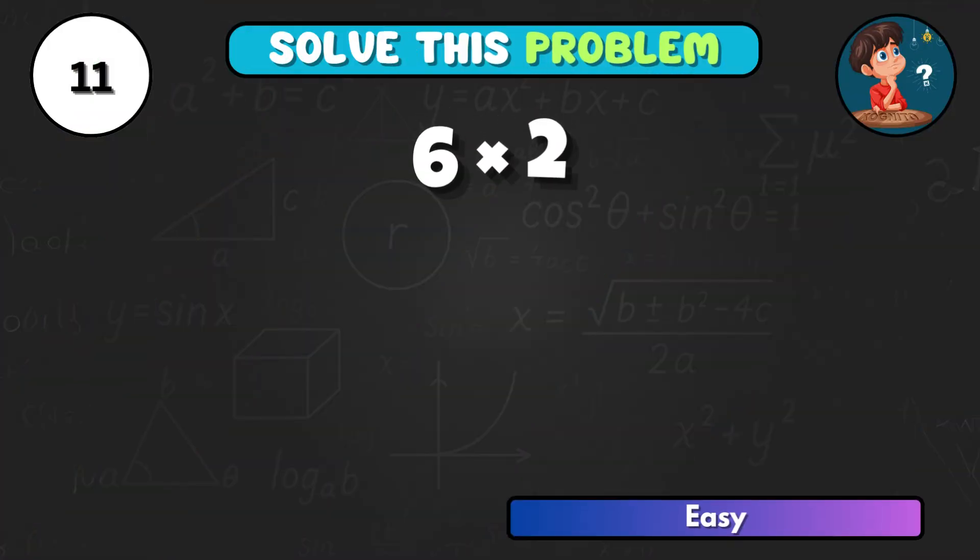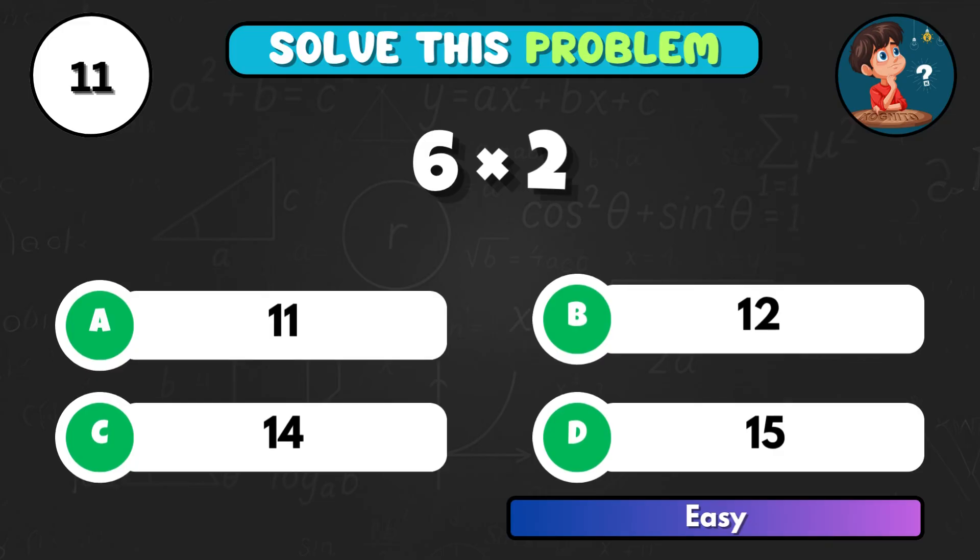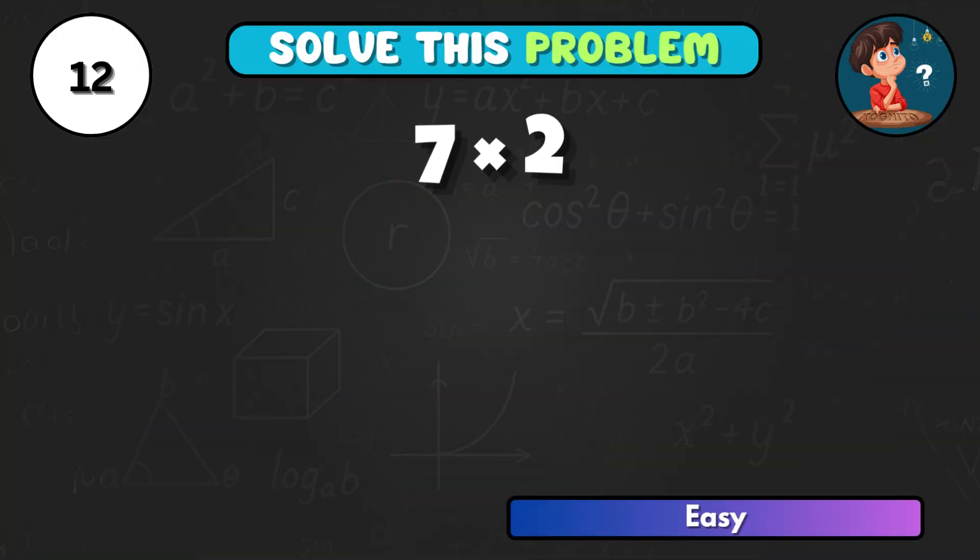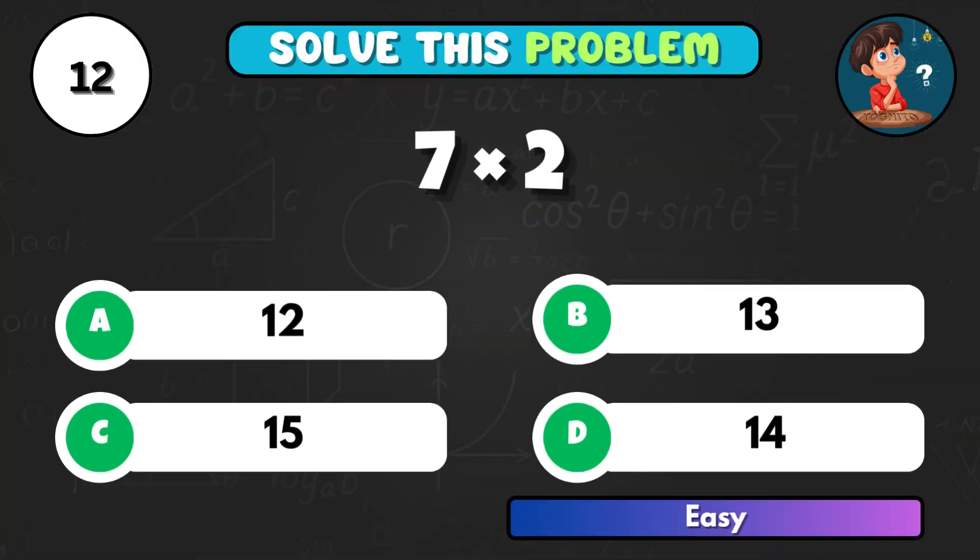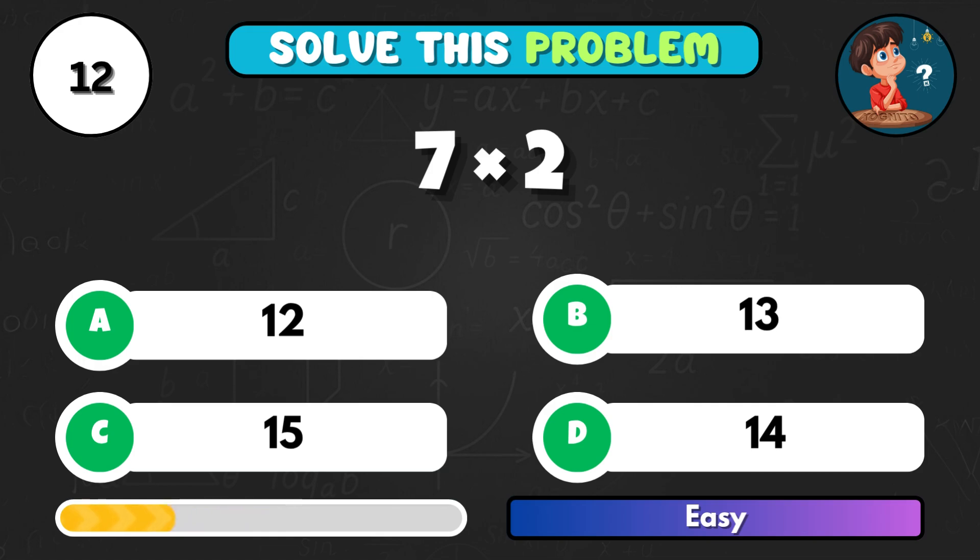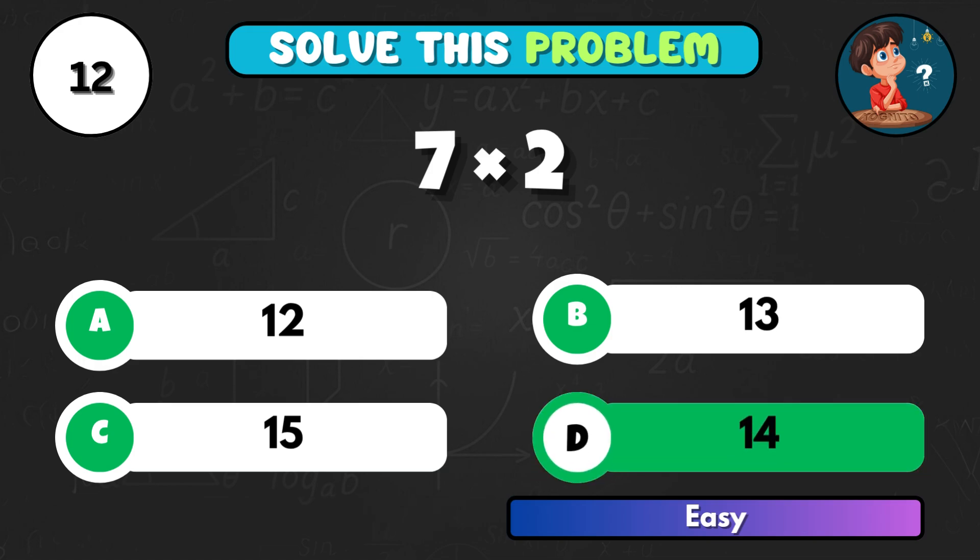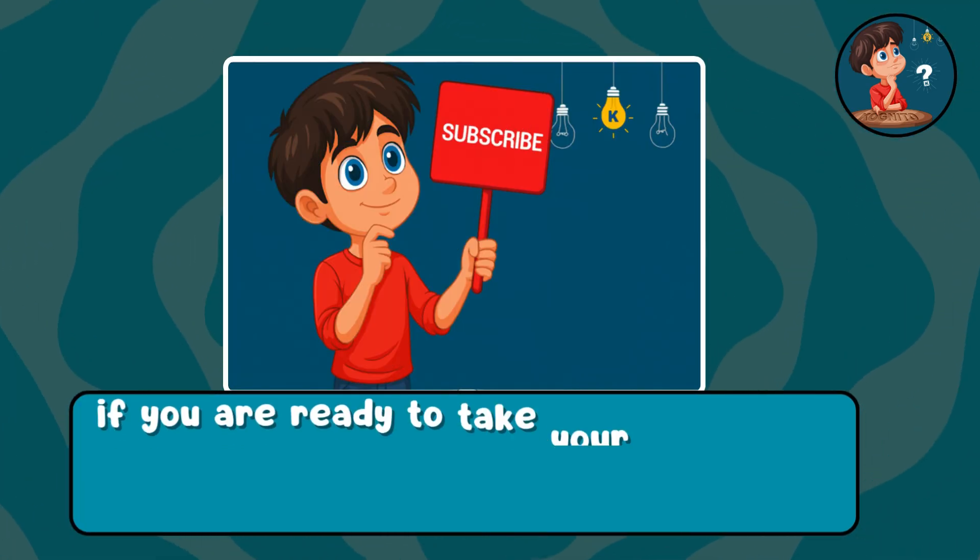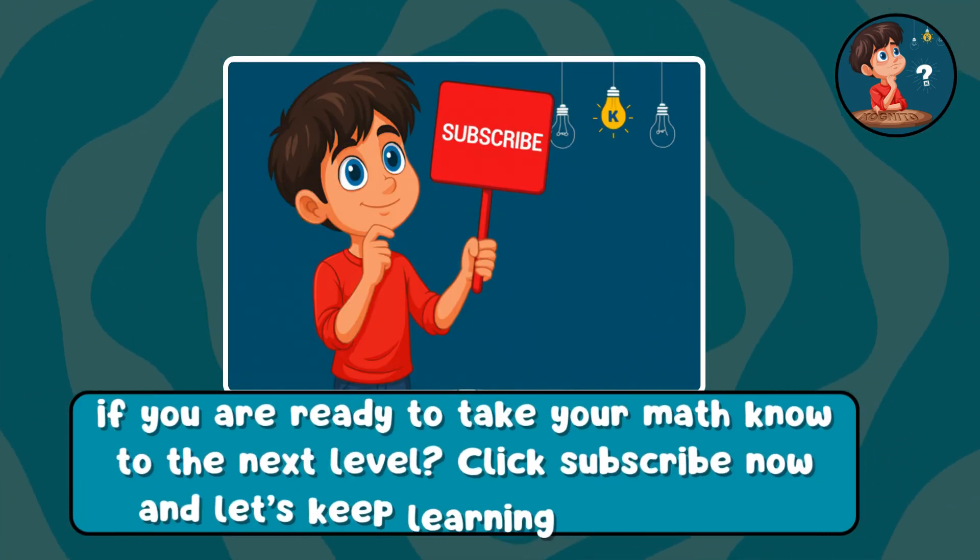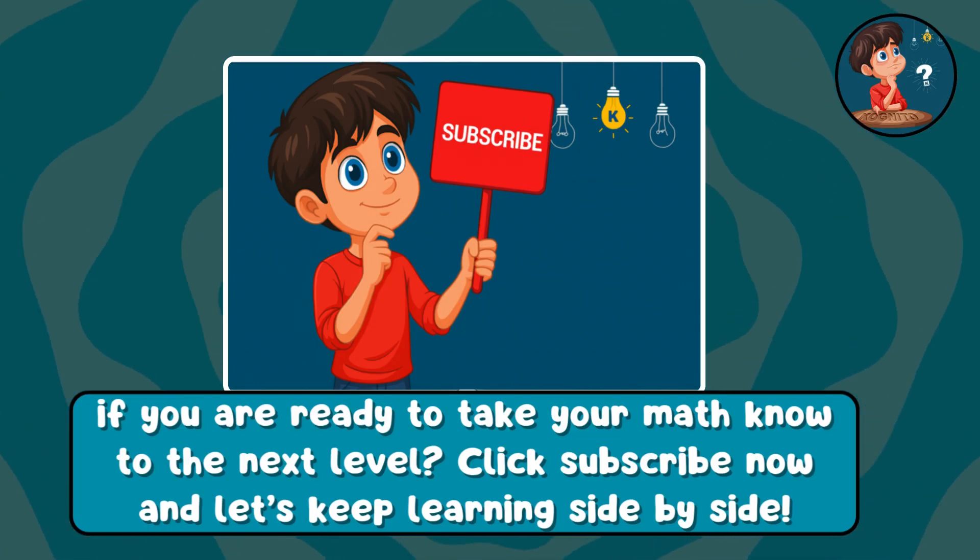6 times 2, can you work it out? That's B, making 12. 7 times 2, what's your total? Correct letter D equals 14. If you're ready to take your math skills to the next level, click subscribe now and let's keep learning side by side.